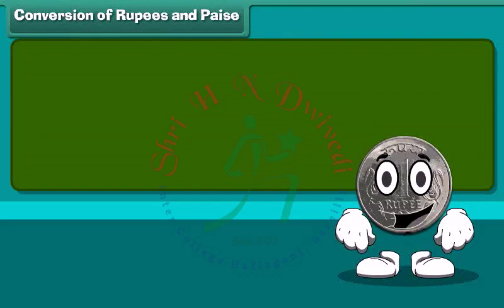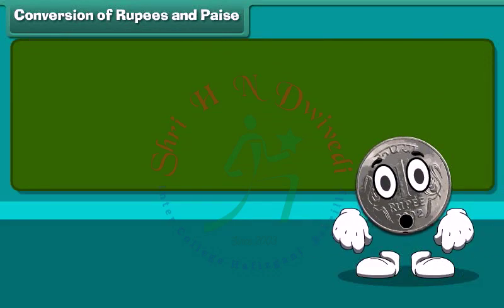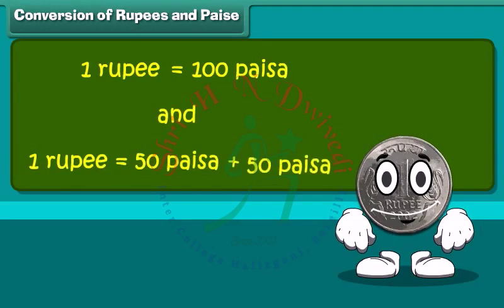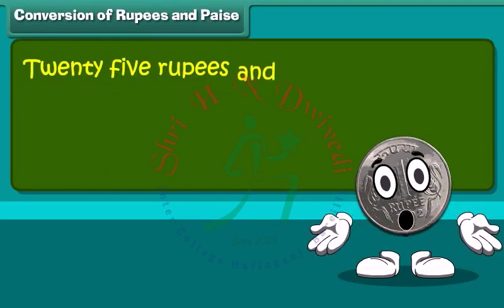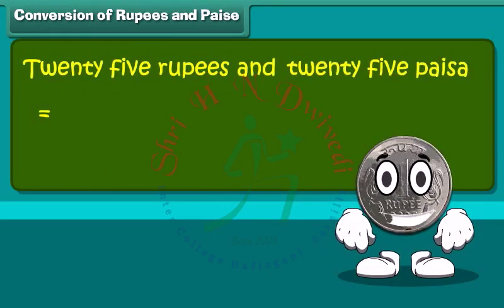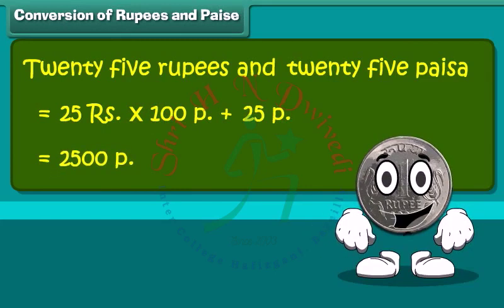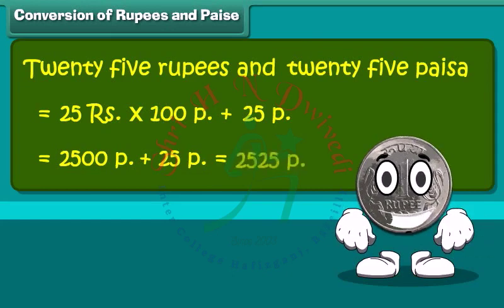We start with conversion of rupee to paisa and vice versa. 1 rupee is equal to 100 paisa. 25 rupees and 25 paisa is equal to 25 multiplied by 100 plus 25 paisa. This becomes 2500 plus 25 paisa, which we can say is 2525 paisa.